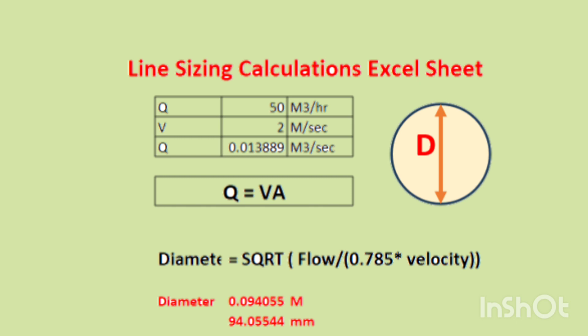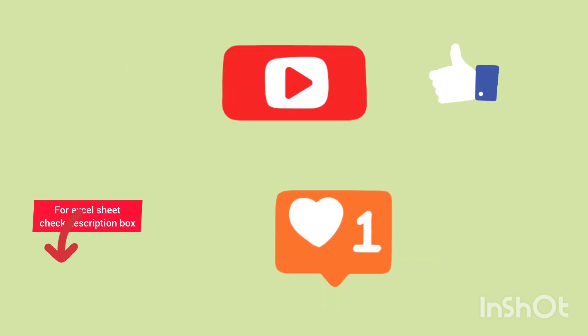If the required pressure drop matches as per your requirement, then our velocity of 2 meter per second is okay and the diameter calculation is also okay. If required pressure drop and calculated pressure drop have a difference, then we have to adjust this velocity, whether it is 2.5 or 1.5, depending upon that calculated pressure drop. So in the next video we will learn how to calculate pressure drop.